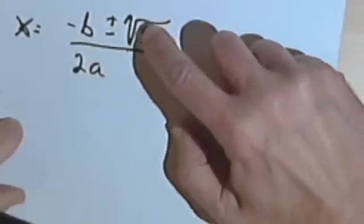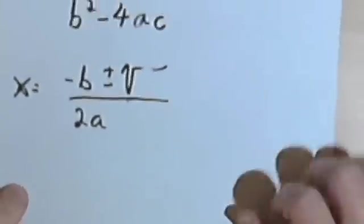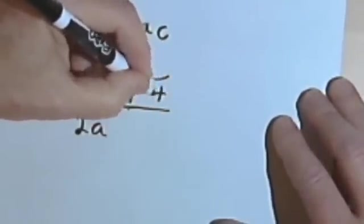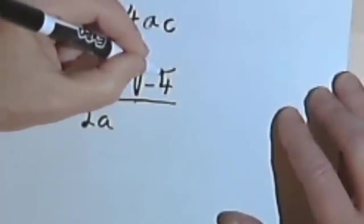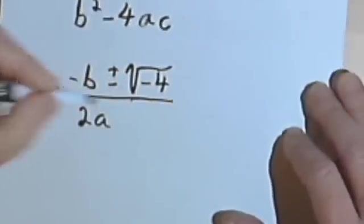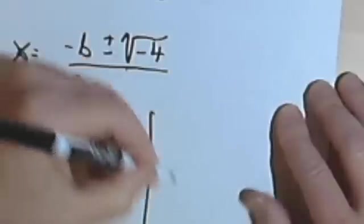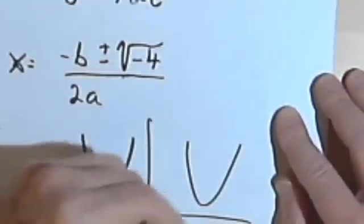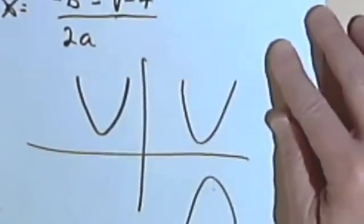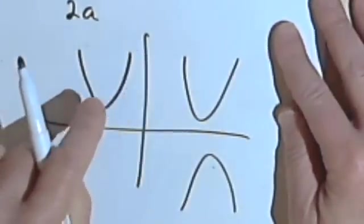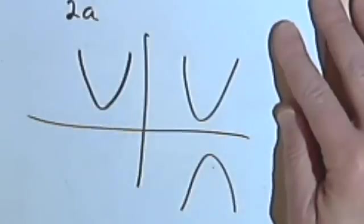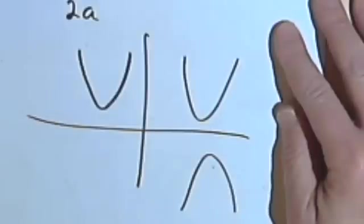The third possibility is what if there's a number underneath that radical sign? What if the discriminant is less than zero? Let's say it's negative 4. I can't take the square root of negative 4. So there's no solution to this. If there's no solution, that means my parabola never touches that horizontal axis. Any parabola that I want to draw that does not touch the horizontal axis would be an example of an equation that has a discriminant that's less than zero.